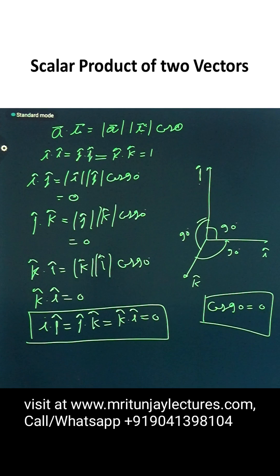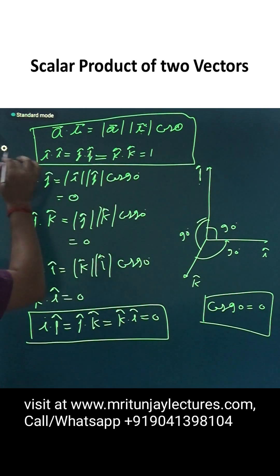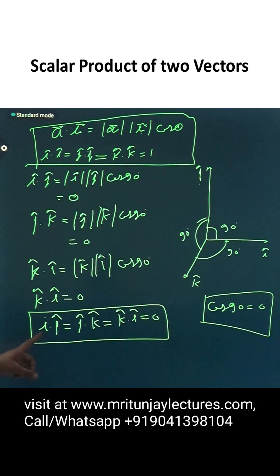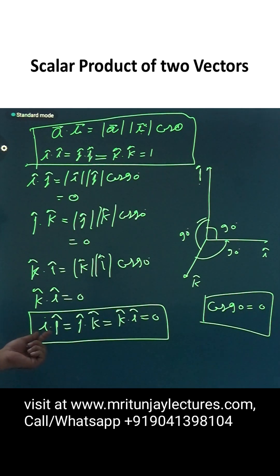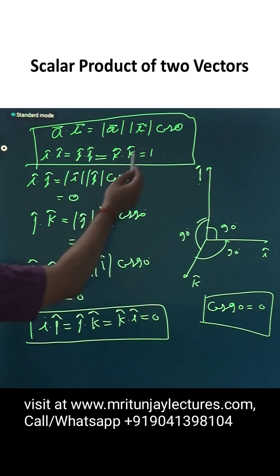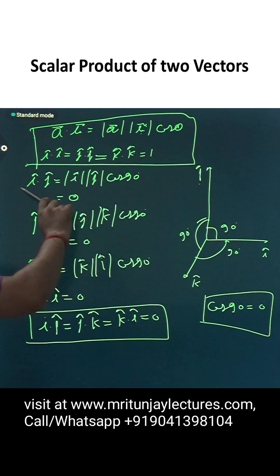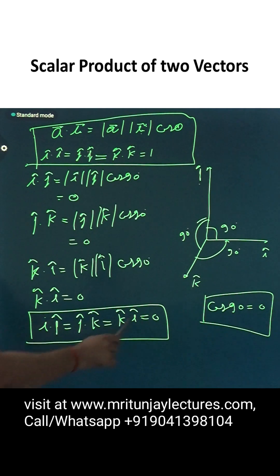So, i dot j, j dot k, and k dot i all equal zero because these pairs are perpendicular to each other. The angle between each pair is 90 degrees, and cos 90 is 0. That is why we get 0.